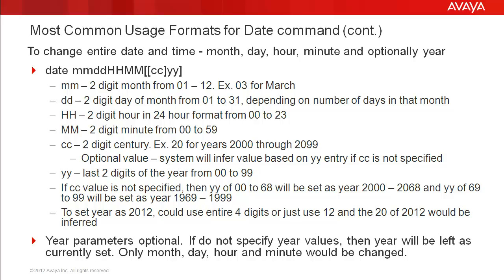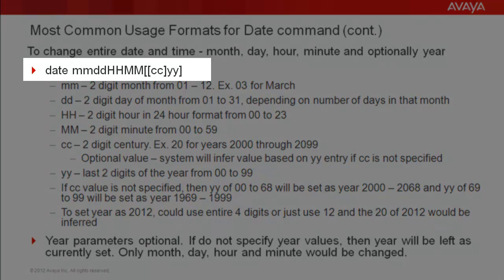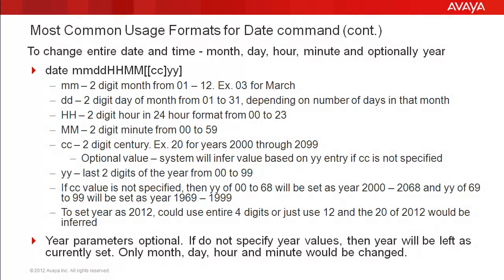If you need to change the entire date or several parameters, use the syntax shown on this slide. The month parameter is first — two digits from 01 to 12. The day of the month is also two digits from 01 to 31, depending on how many days are in that particular month. The hour and minute formats are the same as the previous slide. The optional year is broken into two parameters: CC stands for the two-digit century — for example, 20 for the years 2000 through 2099. If you don't enter a century value but do enter the two-digit year value, the system will set the century based on the year value entered. The valid two-digit year values are 00 to 99.